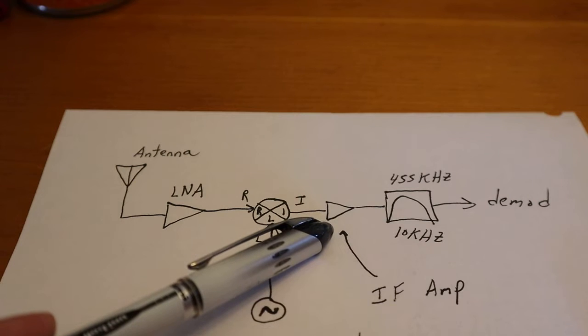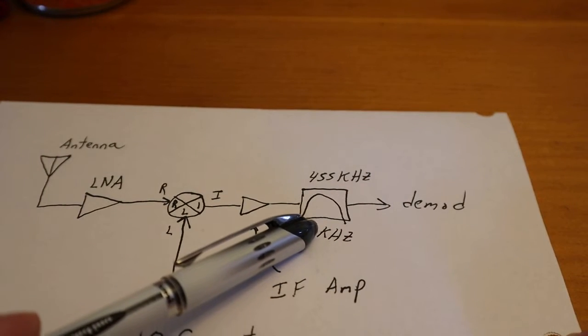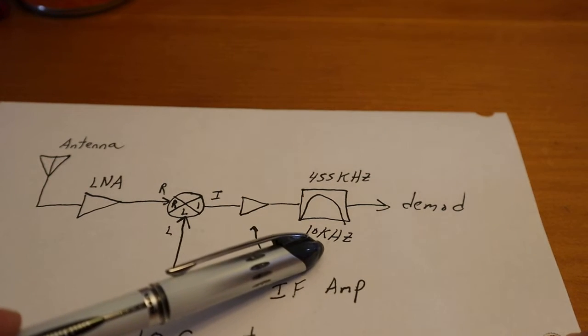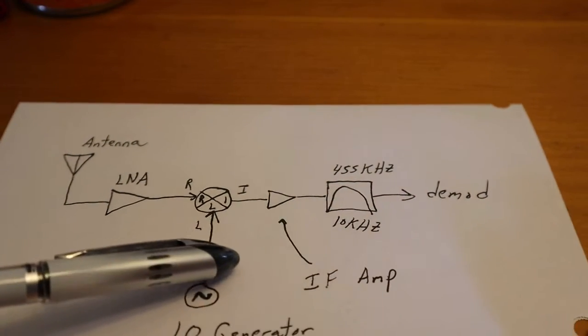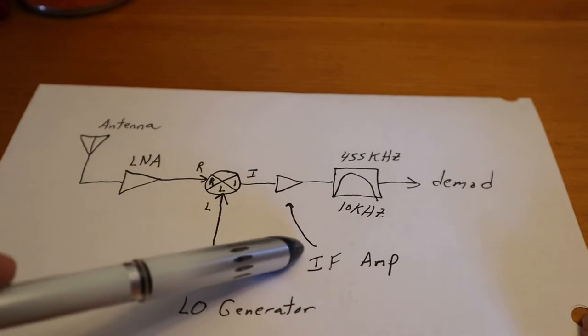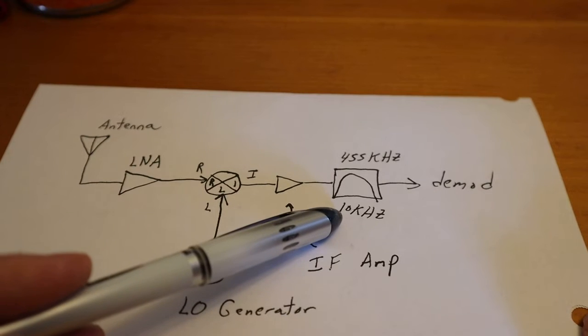Here we have an IF amplifier. Here now is our standard 455 kHz, 10 kHz span. And then it goes off to some DMOD circuit. So this is the standard architecture of why we use an intermediate frequency.